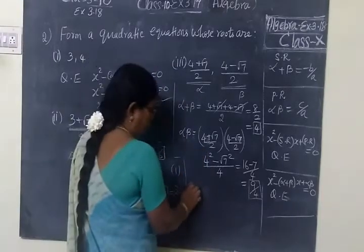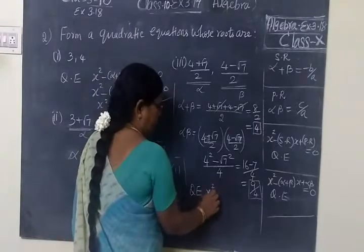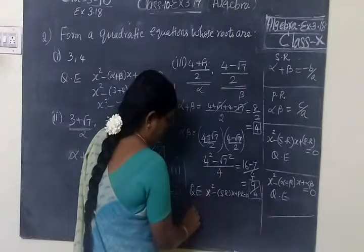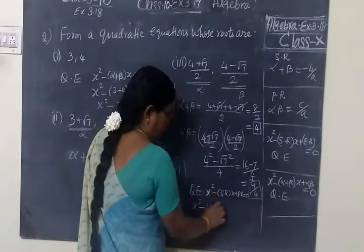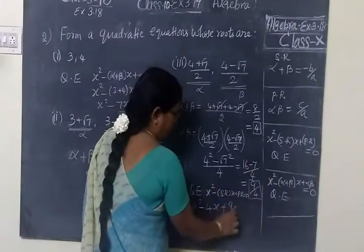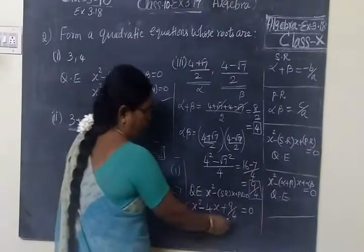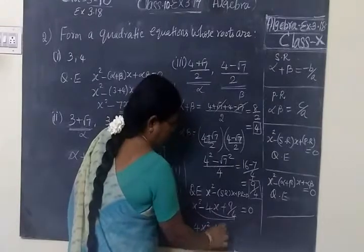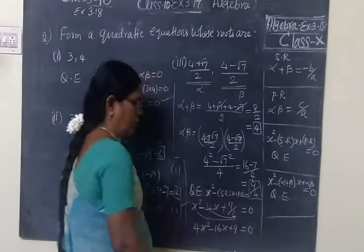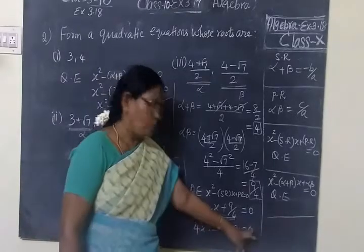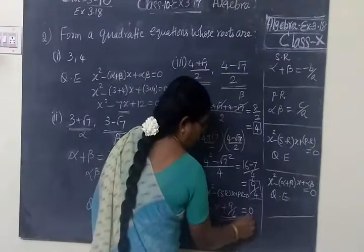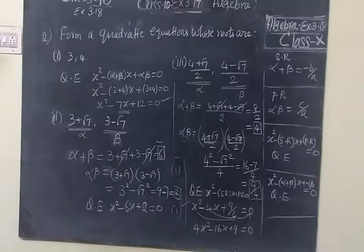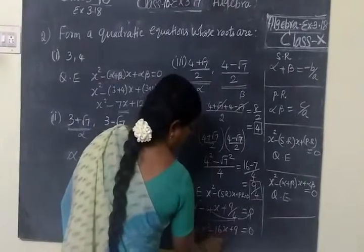So now the quadratic equation: x square minus sum of the roots plus product of the roots equal to zero. So x square minus 4 plus 9 by 4 equal to zero. When you take LCM, 4x square minus 16x plus 9 equal to zero. The LCM 4 on the side will automatically be zero. Now we check the third answer. Third answer is 4x square minus 16x plus 9 equal to zero. So this answer is correct.